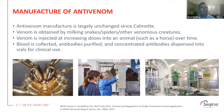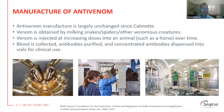Following envenomation, the blood is collected from those animals, antibodies are purified by standard techniques, then concentrated and dispensed into vials ready for clinical use. As part of this GMP process, we must determine the potency of the anti-venom so that we can adequately control what is delivered to a human in cases of envenomation.